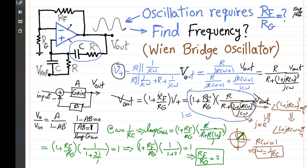In summary: for this circuit to oscillate, we need ω = 1/RC as the frequency of oscillation, and the feed-forward gain must be 3 — that is, 1 + RF/RG = 3, so RF/RG = 2. This is the general way to analyze oscillation circuits, find the oscillation condition, and determine the component requirements. I hope that this is helpful.